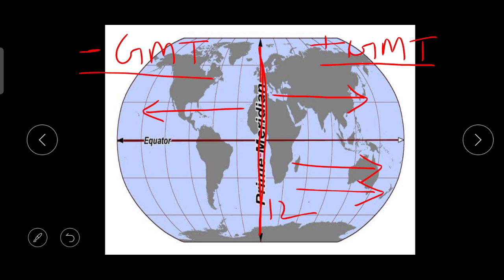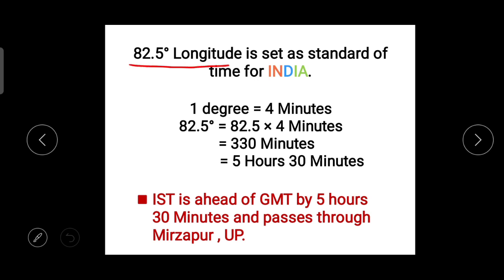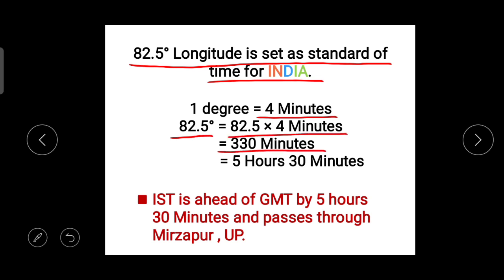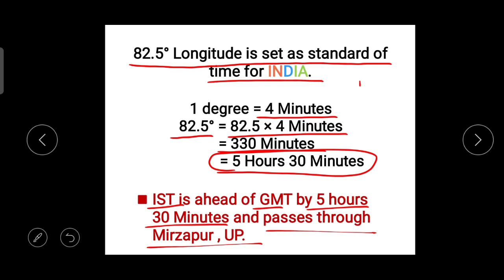Now let's talk about Indian Standard Time. India has a lot of longitudes crossing it, but 82.5 degree east longitude is set as the standard time for India. Since one degree equals four minutes, 82.5 degrees multiplied by four minutes equals 330 minutes, which is five hours and thirty minutes. So India is at GMT plus five hours and thirty minutes. If it is 12 AM at GMT, then in India it is 5:30 AM.